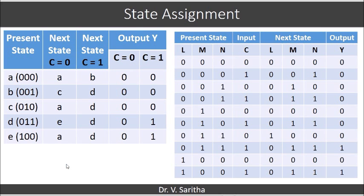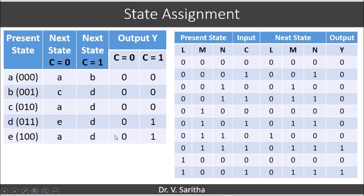So we get the state table like this. It is also converted into another form of state table. Here, L, M, N represent the present state, and C also — a single column is maintained. The next states come in zigzag fashion: A, B, C, D, A, D, E, D, A, D.